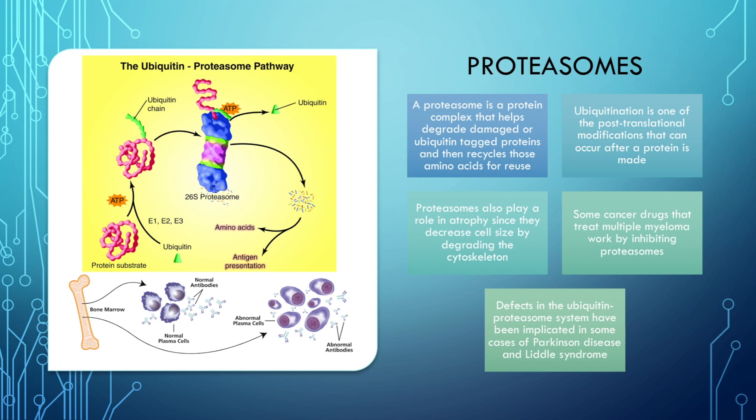To summarize: proteasomes help degrade damaged or ubiquitin-tagged proteins and recycle those amino acids for reuse or to present them to our immune system. They also play a role in the atrophy of cells. We can manipulate proteasomes to treat certain cancers like multiple myeloma, and when things go wrong with proteasomes, it can cause diseases like Parkinson's disease or Liddle syndrome.